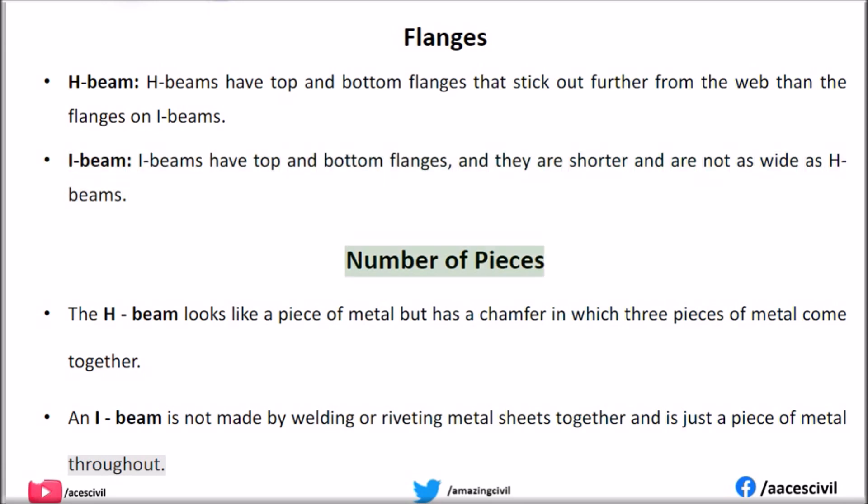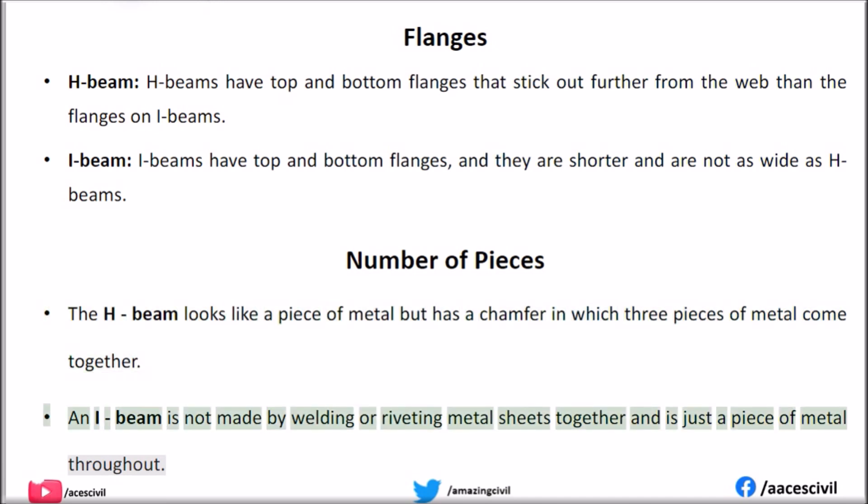Number of pieces. The H-beam looks like a single piece of metal but is fabricated from three pieces of metal joined together. An I-beam is not made by welding or riveting metal sheets together and is just a single piece of metal.